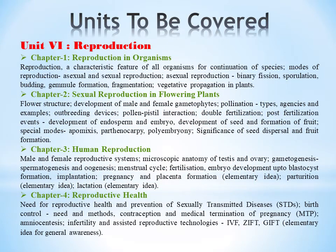Now let's see what we will be learning under Unit 6, that is reproduction. Unit 6 comprises of four chapters. In Chapter 1, that is reproduction in organisms, we are learning about what is reproduction, its characteristic features, and the modes of reproduction — both asexual and sexual reproduction. Then about the asexual reproduction processes.